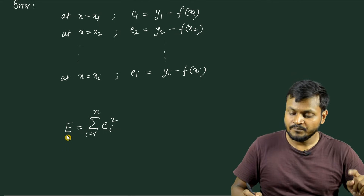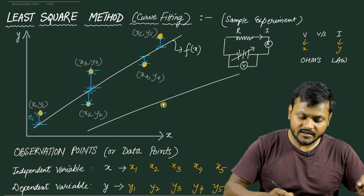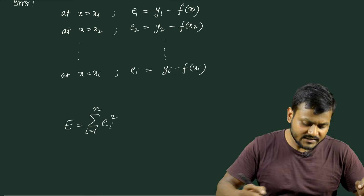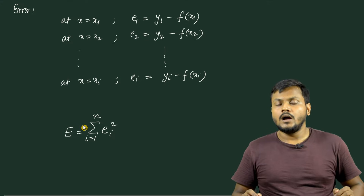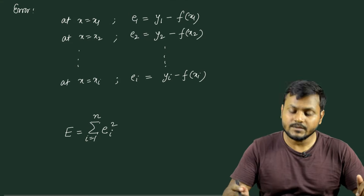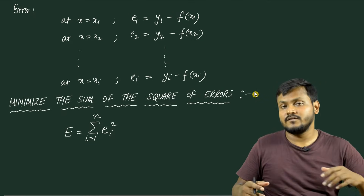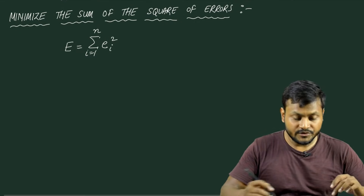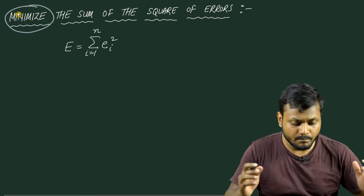Capital E is always positive, and the further a line is from the data points, the greater this quantity will be. So I want to create a line or curve that minimizes this quantity. The objective in the least squares method is to find and minimize capital E — the summation of the square of the errors. That is the key: I want to minimize capital E. So how do I minimize it?